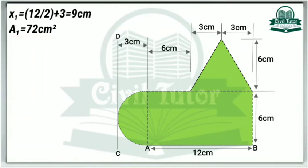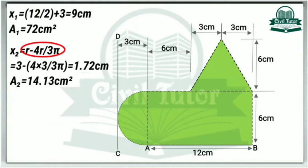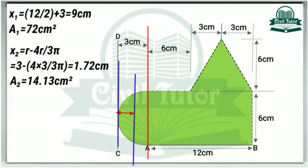Let X2 be the centroidal distance of this area 2 which is a semicircle. X2 will be equal to R minus 4R by 3pi, and on substituting these values we will get X2 equal to 1.72 centimeter. This R minus 4R by 3pi is the distance of centroid of this semicircle from reference line CD. As we know, the centroid of a semicircle about its diameter is equal to 4R by 3pi, so we get X2 by subtracting this centroidal distance from the radius.